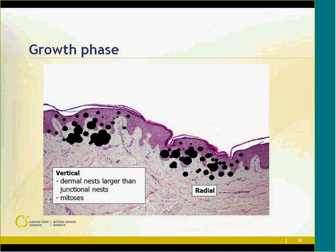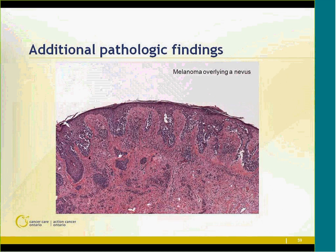Growth phase refers to the tumorigenic potential in the dermis. A vertical growth phase melanoma is forming a tumor in the dermis; radial growth phase may have a small, superficial dermal component. When dermal nests are larger than junctional nests, it's vertical growth phase. Finding a mitosis in the dermal component also defines vertical growth phase. A Clark level 3 lesion where the papillary dermis is completely expanded and filled with melanoma is definitively tumorigenic vertical growth phase. Additional pathologic findings most commonly include a coincident nevus, either incidental or underlying.